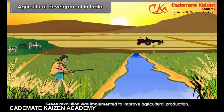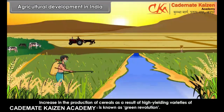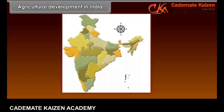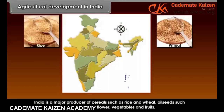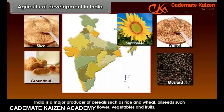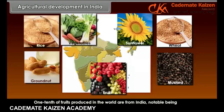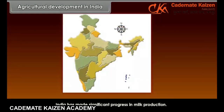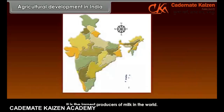The Green Revolution was implemented to improve agricultural production. The increase in the production of cereals as a result of high yielding varieties of seeds, fertilizers and irrigation is known as the Green Revolution. India is a major producer of cereals such as rice and wheat, oil seeds such as groundnut, mustard and sunflower, and vegetables and fruits. One tenth of fruits produced in the world are from India, notable being mango and banana. India has made significant progress in milk production and is the largest producer of milk in the world.